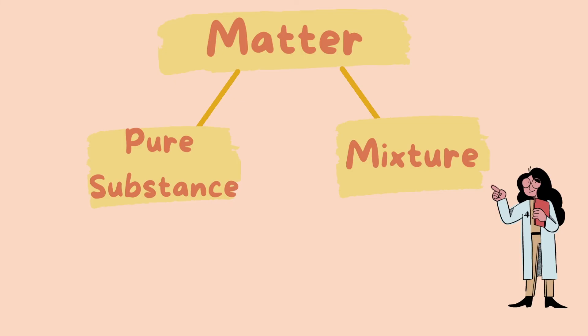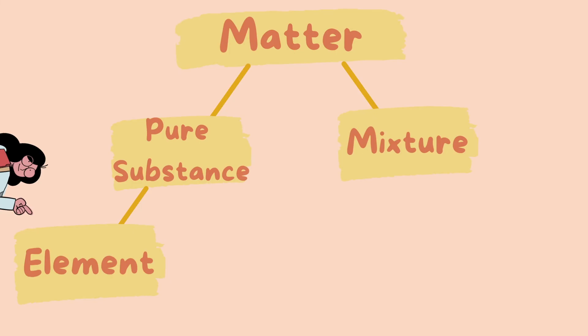A pure substance can either be broken down into an element or a compound. An element is what you find on the periodic table. These cannot be broken down into any simpler substance, even by chemical reaction. A compound is a substance combined of two or more elements in definite proportion.